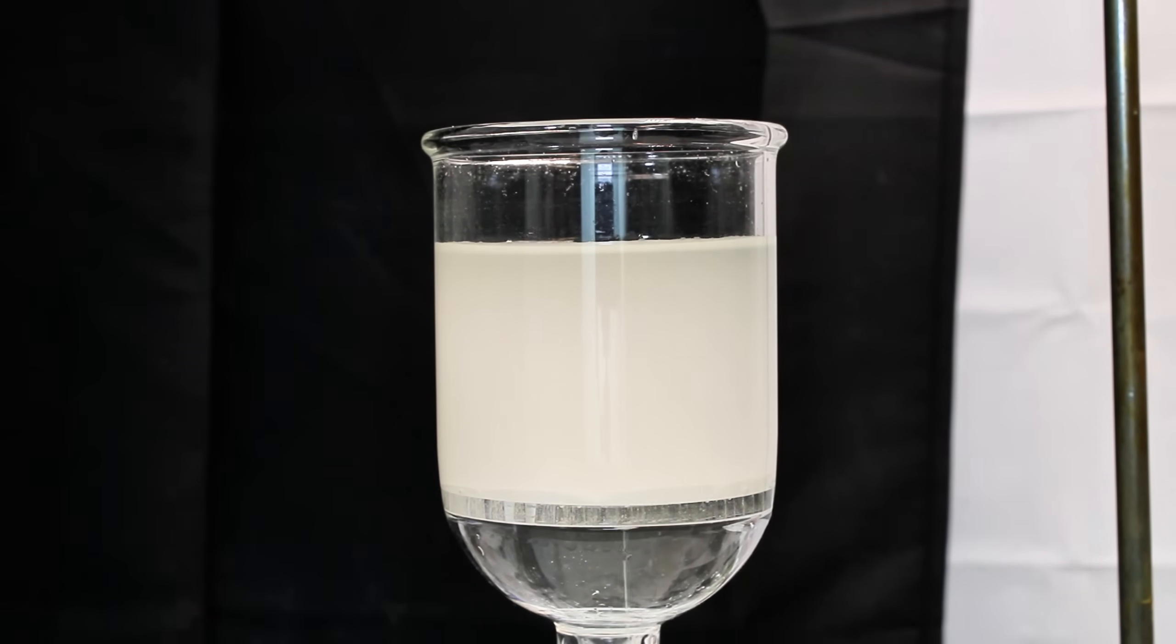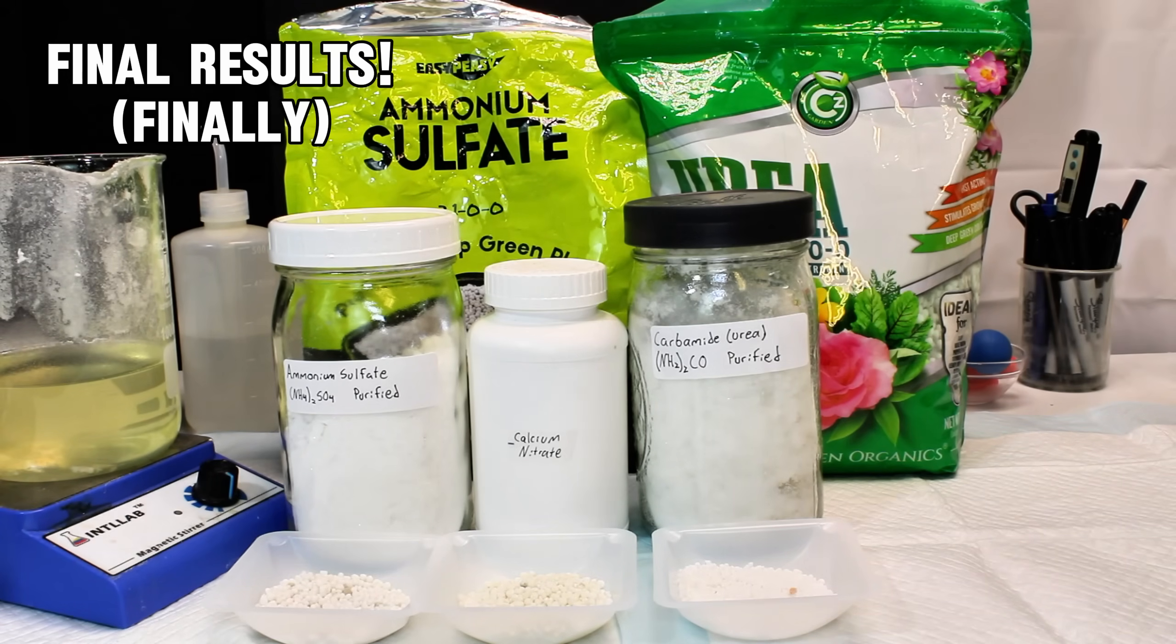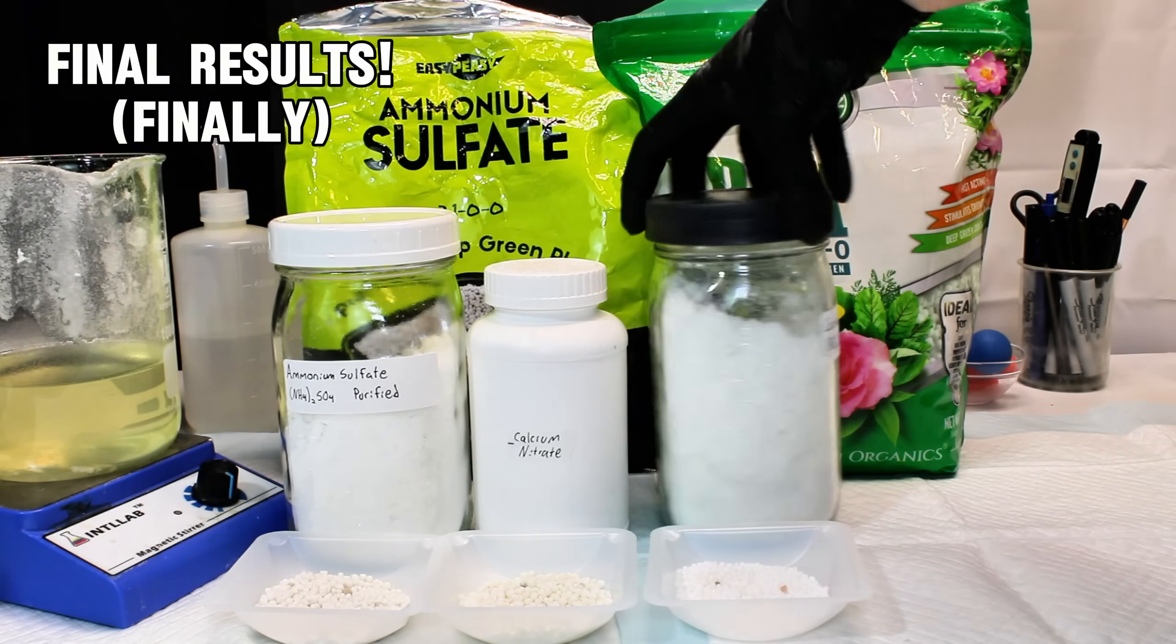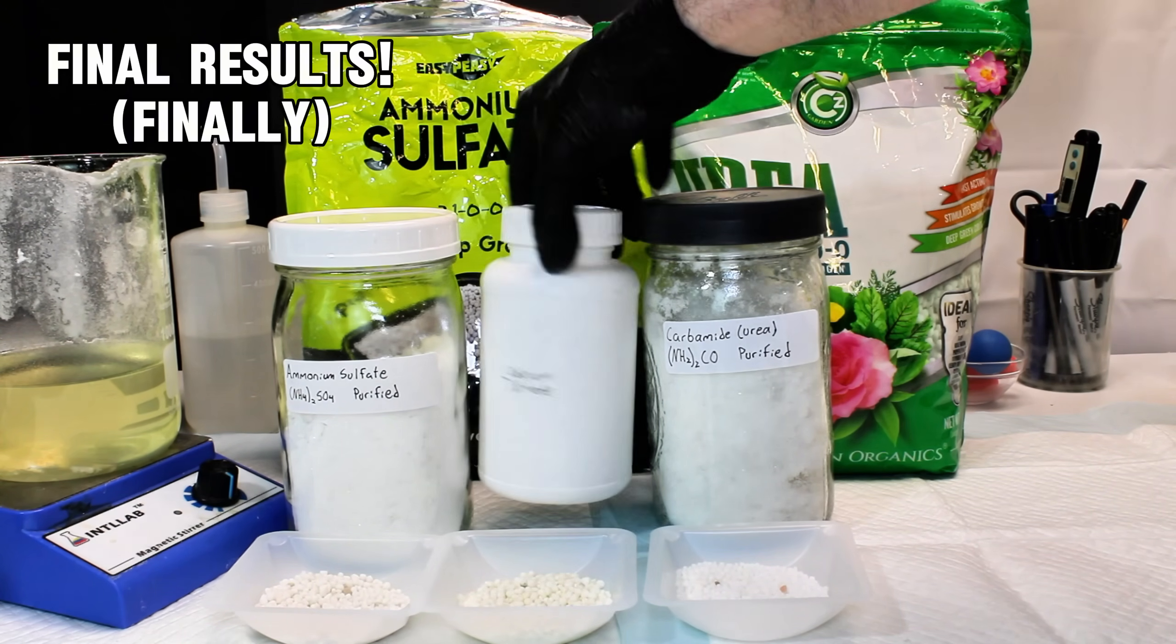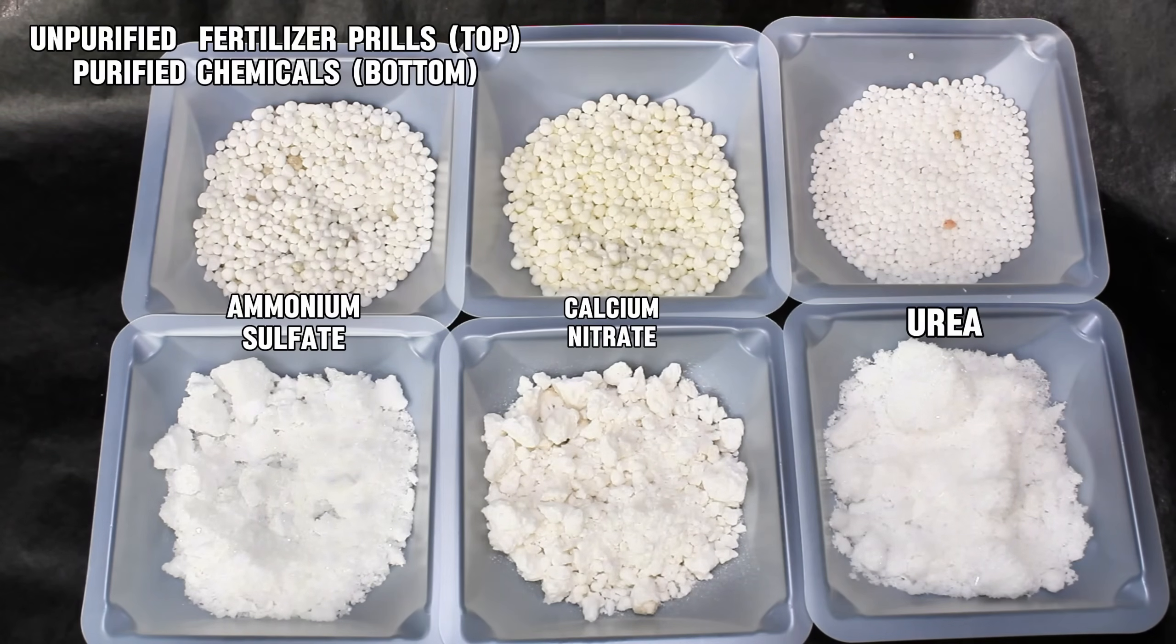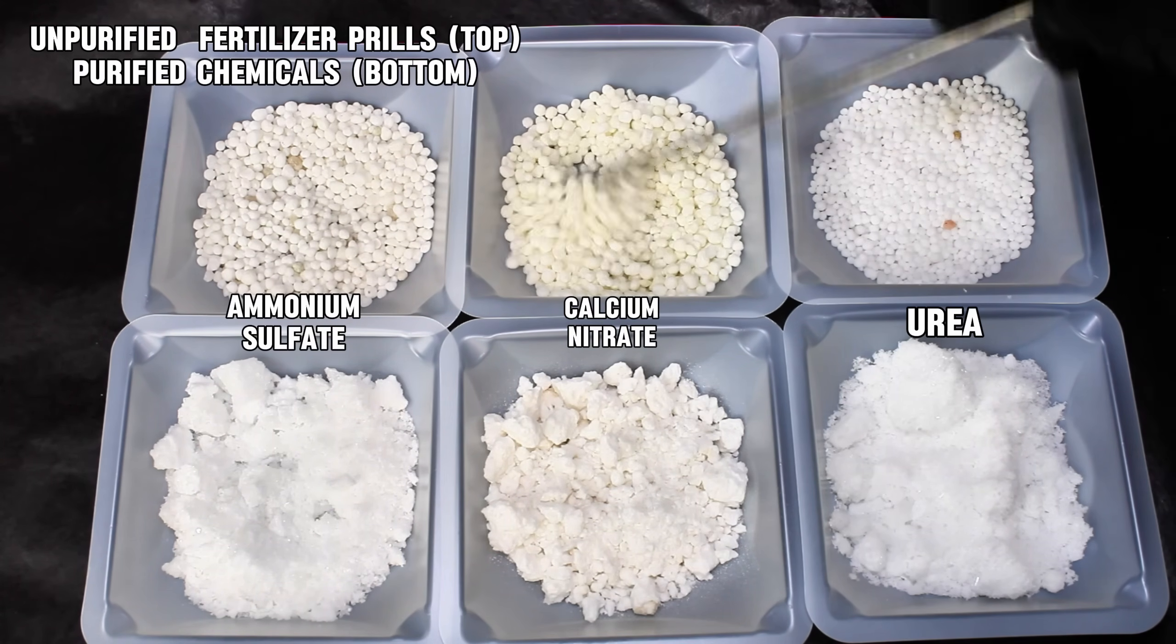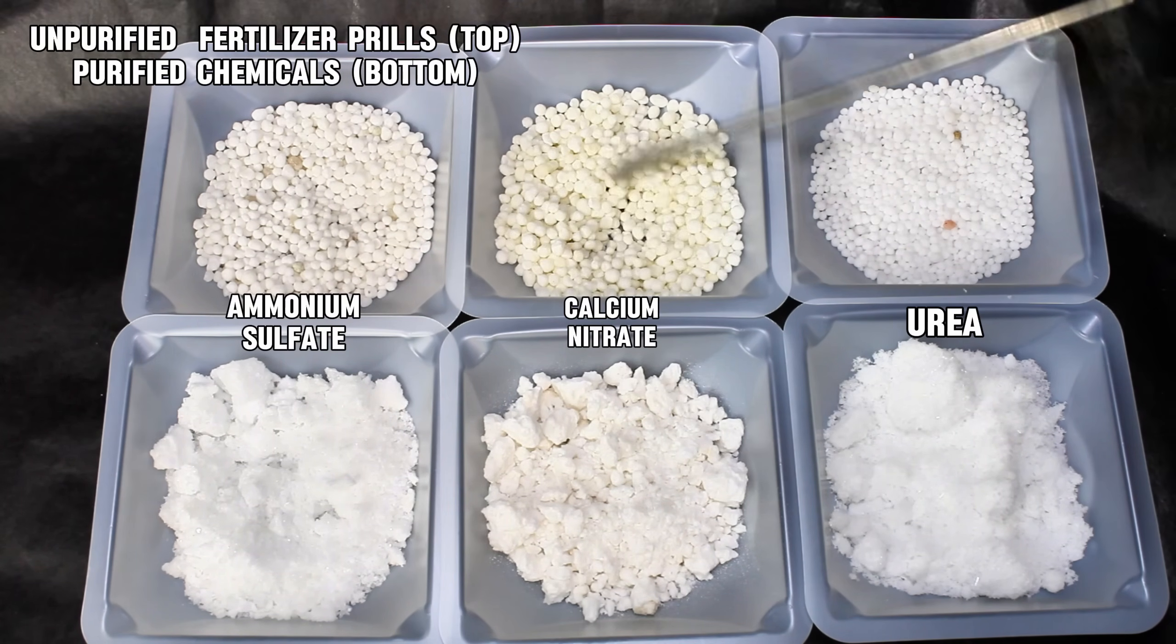This process was repeated a couple more times over the course of the next few weeks until I was left with a mostly pure ammonium sulfate. Now after more than a month from starting this project, here is some of what I collected, and here you can see the initial unpurified fertilizers alongside the purified versions below. I plan on using all of these in a variety of future videos given the broad usefulness of these salts.